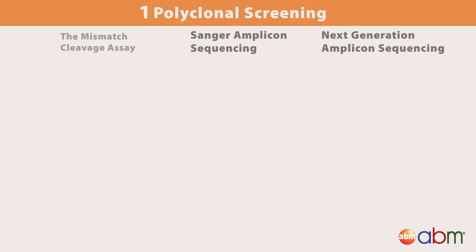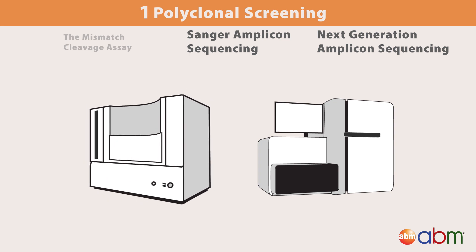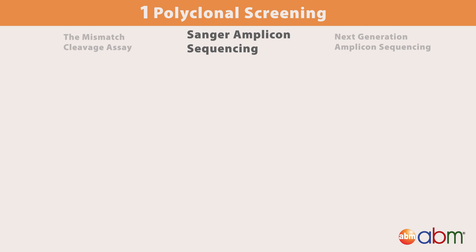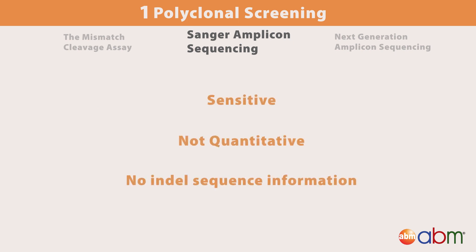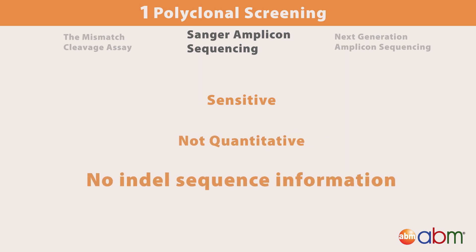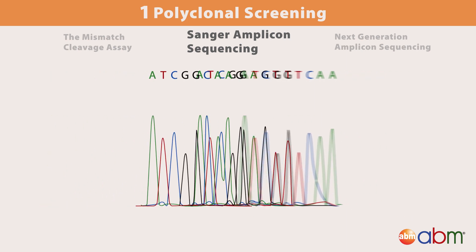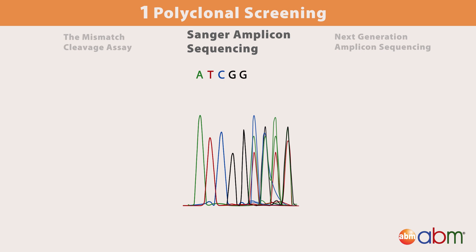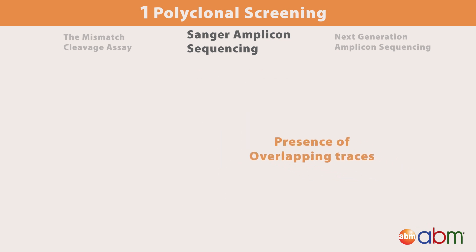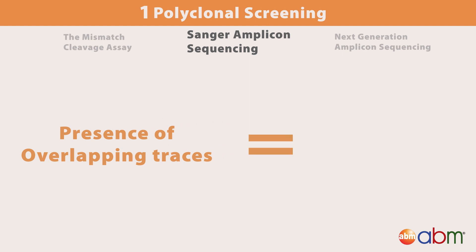Amplicon sequencing can be done using Sanger sequencing or next-generation sequencing. In either case, the target region is amplified by PCR first. Sanger sequencing of a PCR amplicon is a more sensitive detection method, but it can be difficult to analyze for quantitative or sequence information. This is because sequencing reads for an edited polyclonal pool will have many overlapping traces downstream of the target site. These overlapping traces cannot be distinguished with typical Sanger sequencing analysis programs, but their presence or absence is usually enough to determine whether any editing has occurred in the pool.